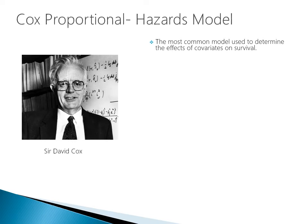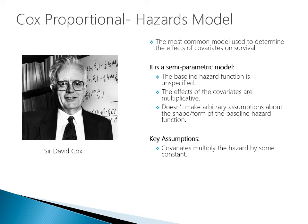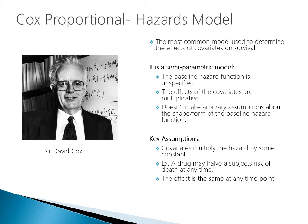The Cox proportional hazards model is the most common model used to determine the effects of covariates on survival. It is a semi-parametric model — the baseline hazard function is unspecified, the effects of the covariates are multiplicative, and it doesn't make arbitrary assumptions about the shape of the baseline hazard function. This model has key assumptions: the covariates multiply the hazard by some constant, for example a drug may halve the subject's risk of death at any time, and the effect is the same at any point in time. Violating these assumptions can seriously invalidate your model, so you have to be very careful when building survival models.